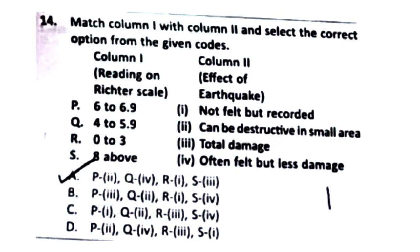Question 14: Match Column 1 (Richter scale readings) with Column 2 (effects of earthquake). Select the correct option from the given codes. After matching P, Q, R, and S, the right answer is Option A.